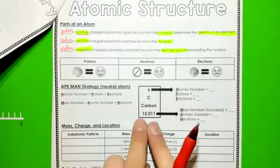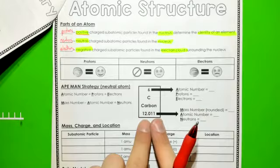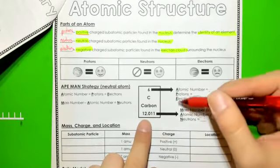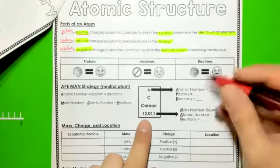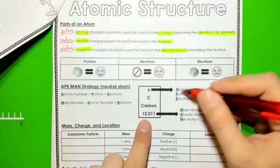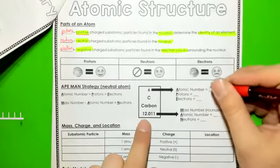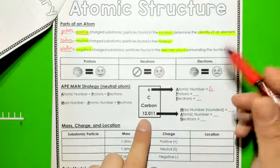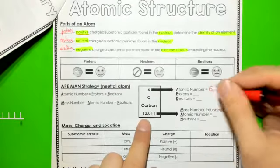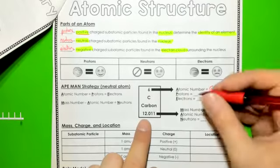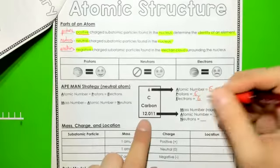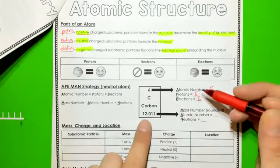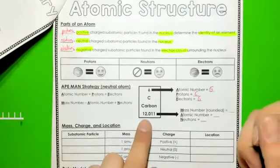So in order to break down the periodic square we have on the periodic table, we use an acronym known as APEMAN. That's A-P-E-M-A-N. And what it stands for is A stands for atomic number. In this situation, our atomic number is six for the element carbon. It's listed right there at the top of the square. If our atomic number is six, then it happens that our protons and our electrons also equal six. So carbon has an atomic number of six, six protons, and six electrons.